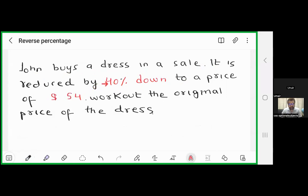In a sale, after reducing the price by 40 percent, the sale price of the dress is $54. Work out the original price of the dress. We have to find out the original price, the price which was before the sale.